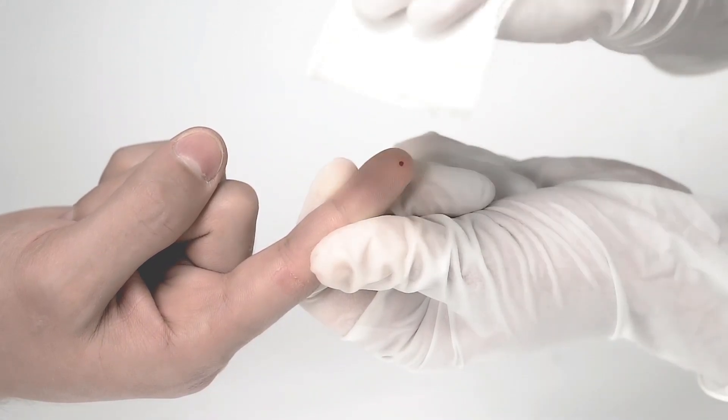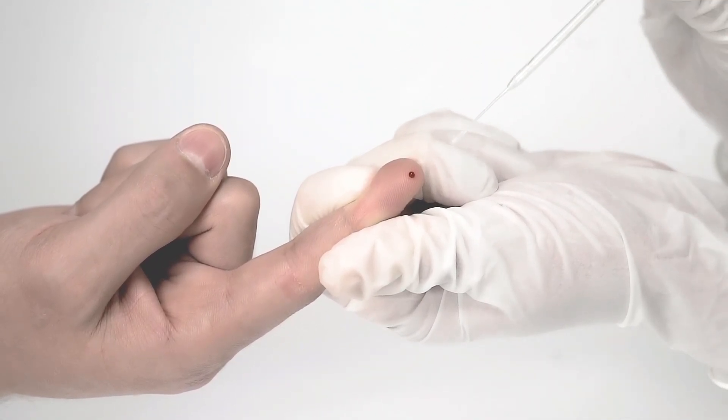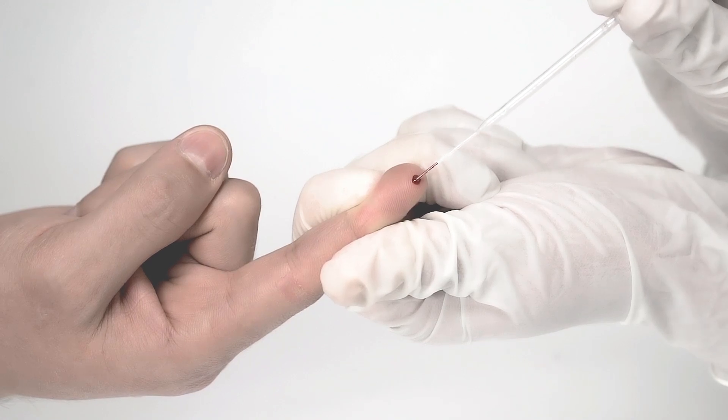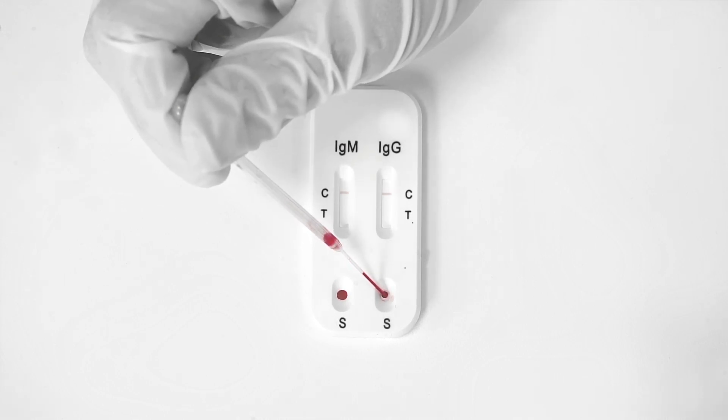Wipe off the first droplet of blood using the sterile gauze. You will collect the blood by squeezing the bulb on the top portion of the pipette. Now, place a drop of blood into each of the sampling wells on the test cassette, labeled S.